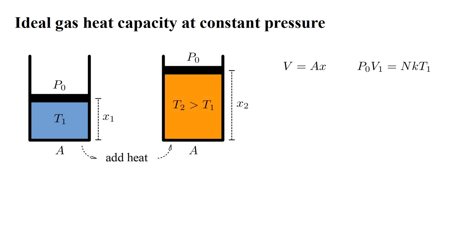Suppose we add heat to the gas to increase its temperature to T2. If the volume were held constant, the gas pressure would increase. However, with the gas pressure held constant, the volume will increase. The piston will move to height X2. Now the ideal gas law reads P0 V2 equals NK T2.